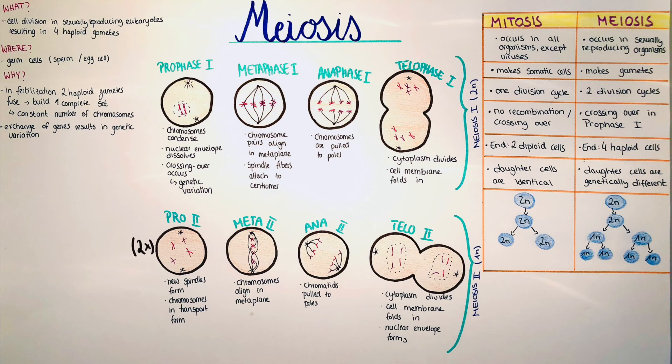In mitosis we only have one division cycle, and in meiosis we have two division cycles: the meiosis phase I and the meiosis phase II.